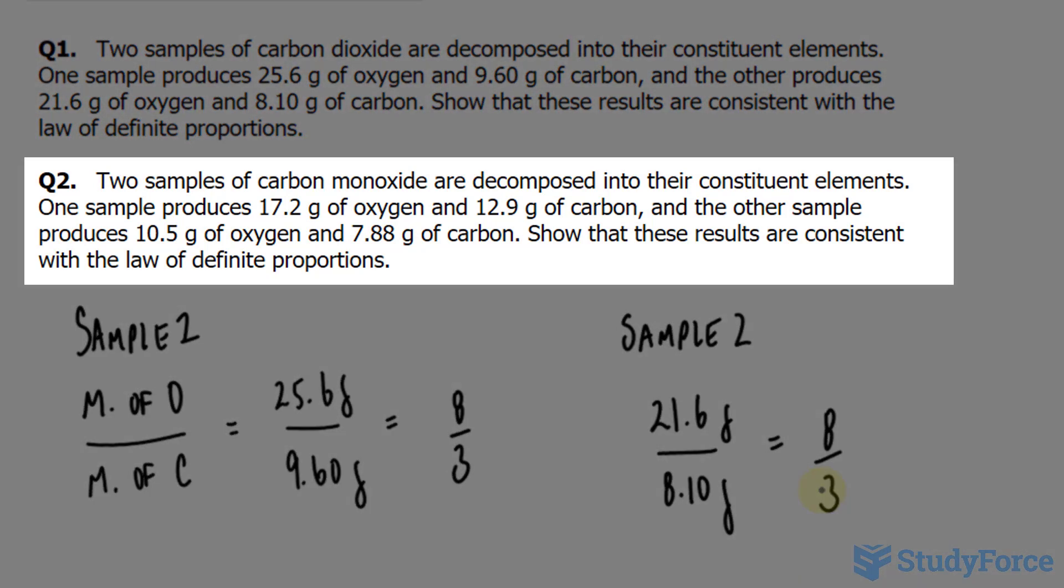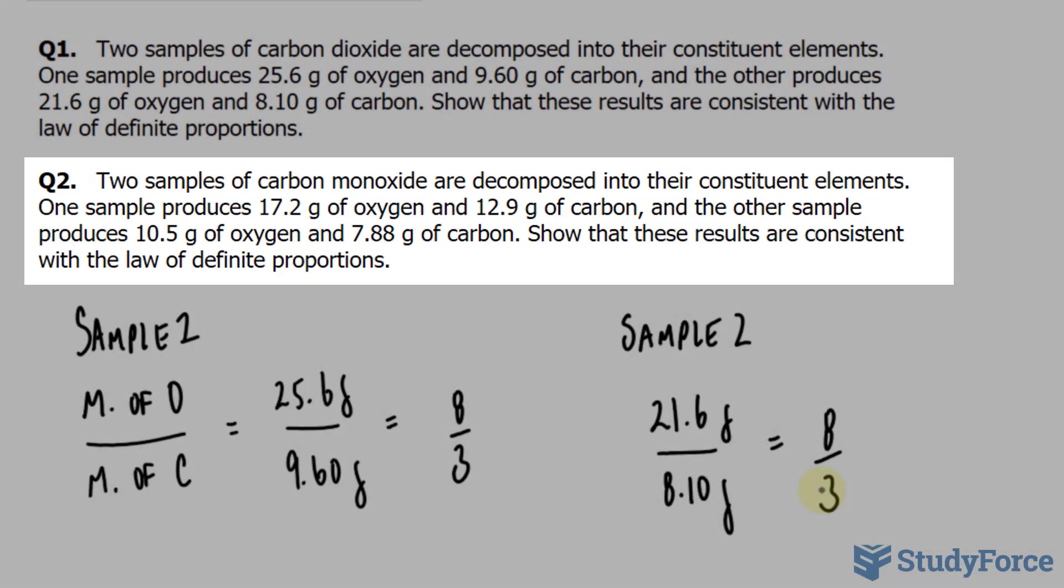Two samples of carbon monoxide are decomposed into their constituent elements. One sample produces 17.2 grams of oxygen and 12.9 grams of carbon, while the other sample produces 10.5 grams of oxygen and 7.88 grams of carbon. Show that these results are consistent with the law of definite proportions.